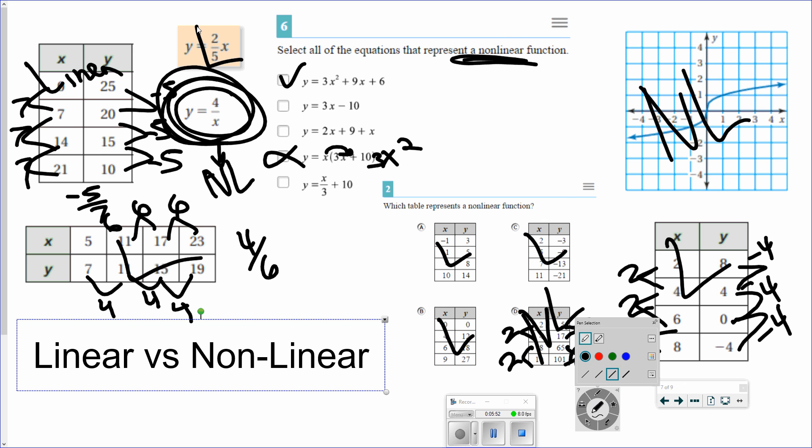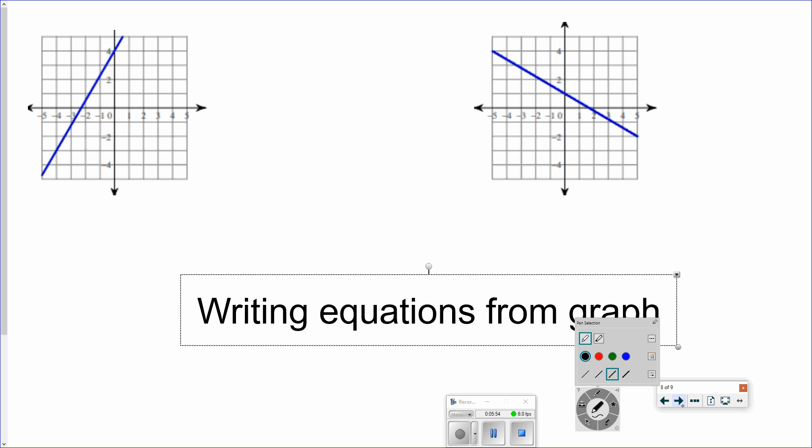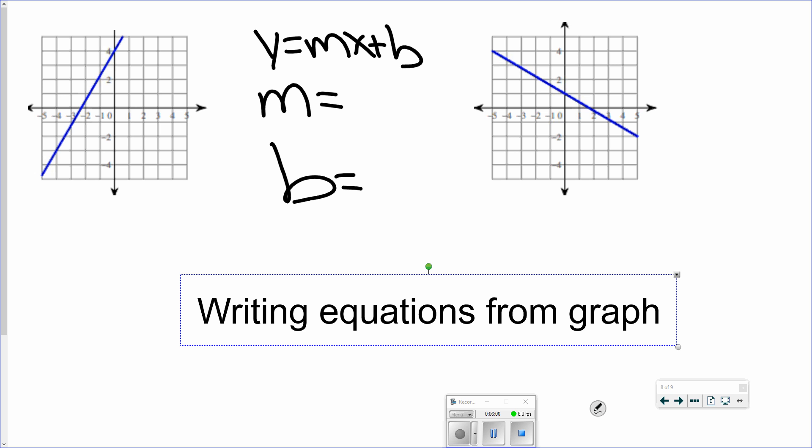Last thing we're going to do is write equations from graphs. We need three things. So we're writing y equals mx plus b. You need your m, you need your b. So this graph on the left here. My b is my y-axis. All I have to do is look at it and see where does that hit the y-axis at. It's happening right there. So that's 1, 2, 3, 4. b is 4.